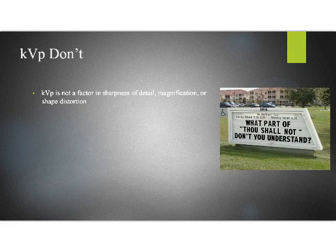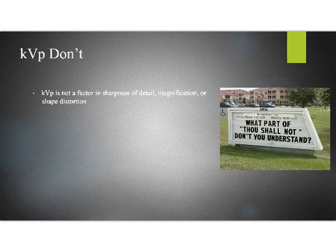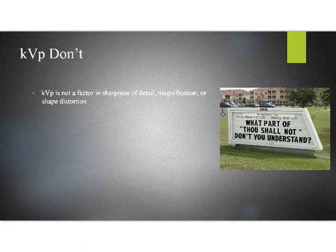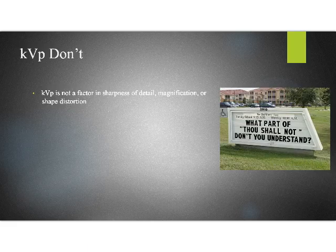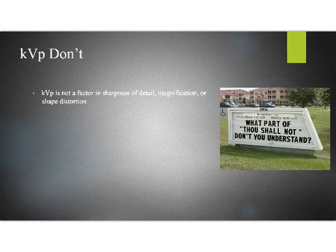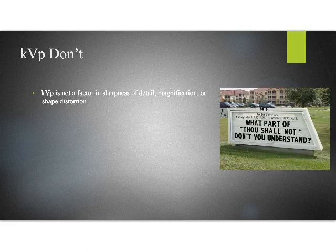Okay. Finally, what doesn't KVP do? Because what I pretty much told you is KVP almost does everything. KVP does a lot of stuff. It controls scatter, it controls quality, it controls quantity. Pretty much technique is KVP. In fact, the way that your Merrill's List technique is based on KVP. What it doesn't do is any of the geometrical stuff. KVP has no bearing on sharpness of detail or unsharpness. Conversely, it has no bearing on shape distortion or magnification. It has no bearing on size distortion. It does not affect geometrical qualities of the image. Pretty much everything else though, it's got a hand in it. Thank y'all.